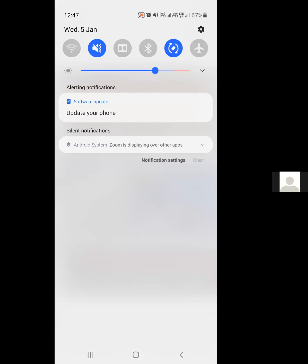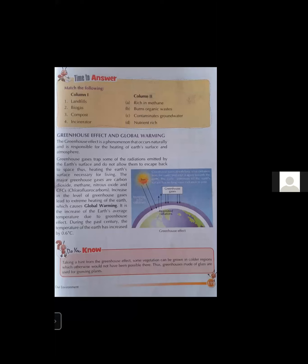Greenhouse effect and global warming — what is the greenhouse effect? The greenhouse effect is a phenomenon that occurs naturally and is responsible for the heating of Earth's surface and atmosphere. Due to the greenhouse effect, the Earth's temperature is maintained. There are many greenhouse gases which trap the heat coming from the sun.